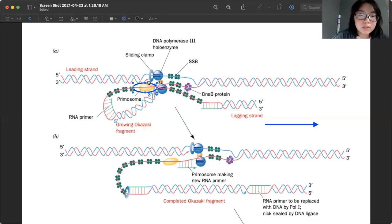But yeah, so the primosome will insert an RNA primer, and so now, so RNA primer is the green part right here. So now that we have this RNA primer, the DNA polymerase can start adding DNA nucleotides onto this strand.